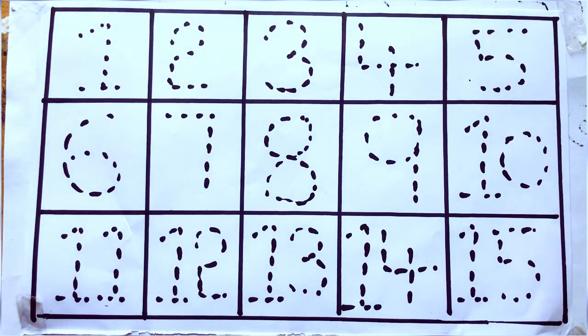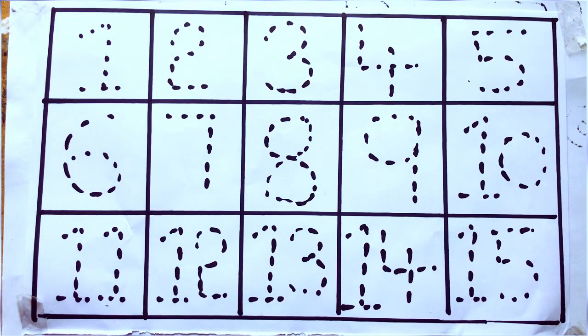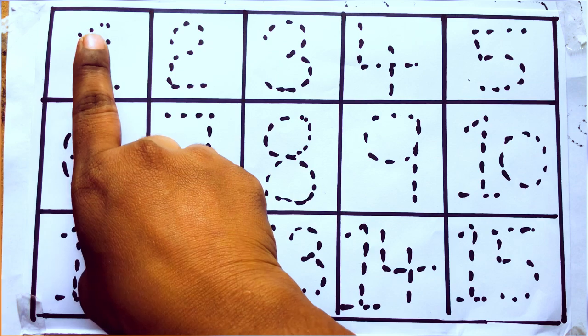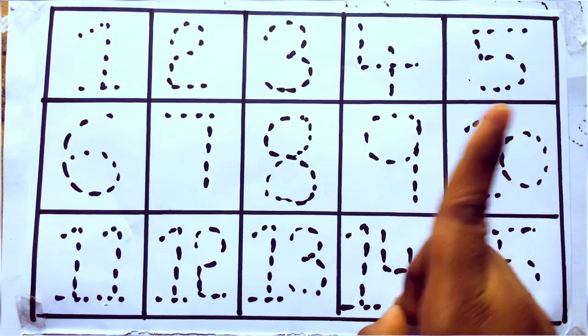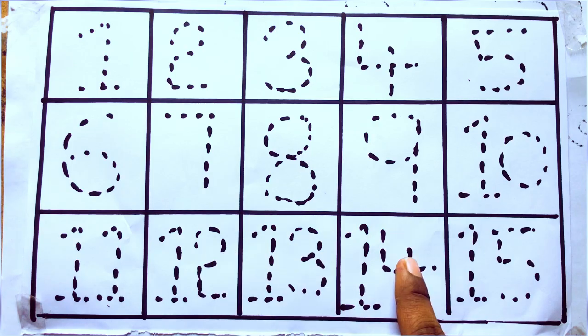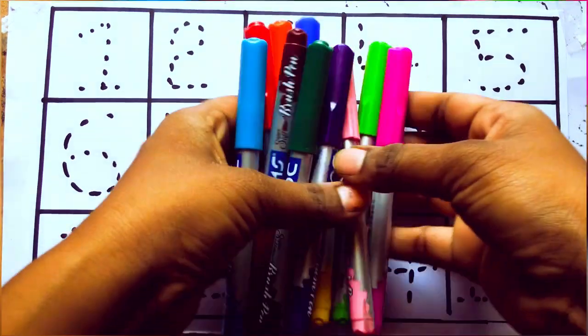Hi kids, how are you? Welcome to our channel. Today we are going to learn numbers 1 to 15: 1, 2, 3, 4, 5, 6, 7, 8, 9, 10, 11, 12, 13, 14, 15. Okay, these are all our color pencils.